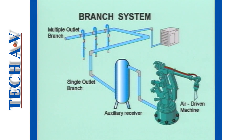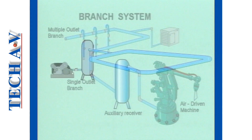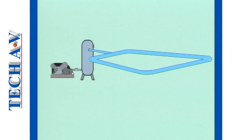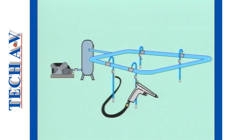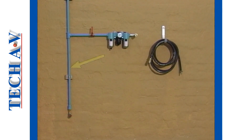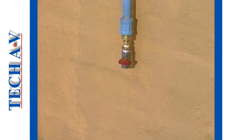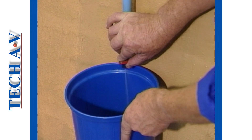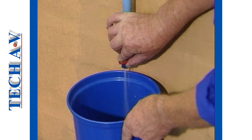Branch lines often feed into an auxiliary receiver, designed to supply a particular machine or section of the plant. At various locations along the air main, you will find user points, or outlets, into which working devices may be connected. In a properly designed system, a user point is fed off a drop leg. The lower section of a drop leg acts as a water trap. A drain cock, or valve, allows for water to be drained off when necessary.